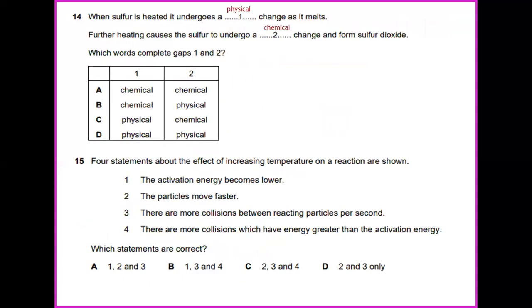Question 14: When sulfur is heated, it undergoes a physical change as it melts. Further heating causes the sulfur to undergo a chemical change and forms sulfur dioxide. Which words complete gap 1 and gap 2? The answer would be C, physical and chemical.